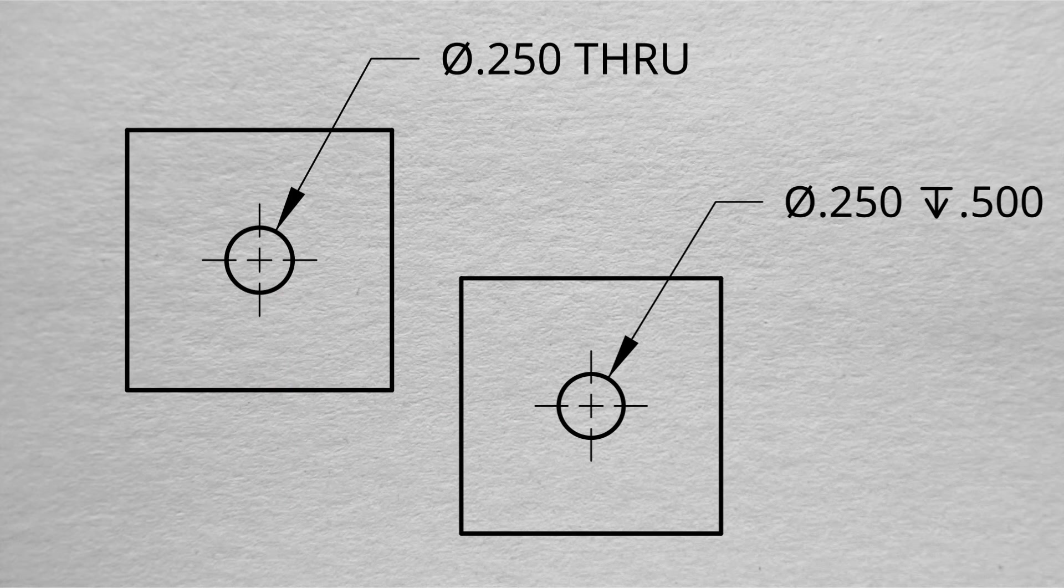So we can see that the top one is a through hole, and then the one on the bottom or towards the right-hand side is a blind hole, because it has a depth of a half inch.